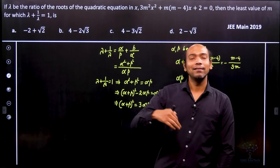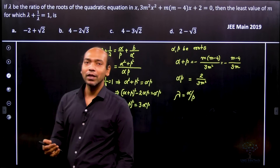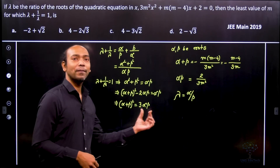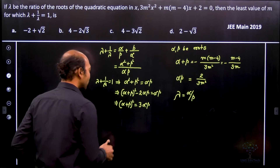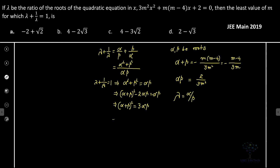Now we rewrite it in terms of sum of roots and product of roots. We substitute alpha plus beta and alpha beta back. So therefore (m minus 4)² divided by 9m² is equal to 6 divided by 3m², which implies that (m minus 4)² is equal to 18.